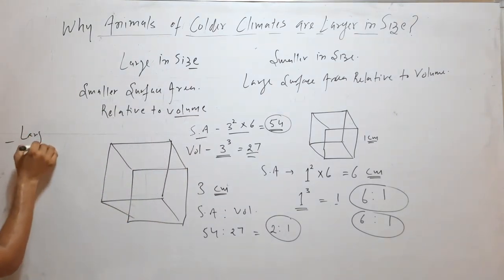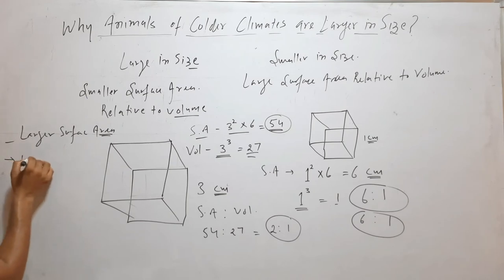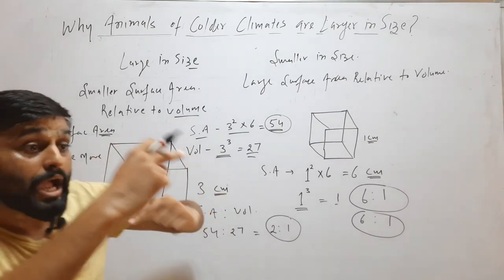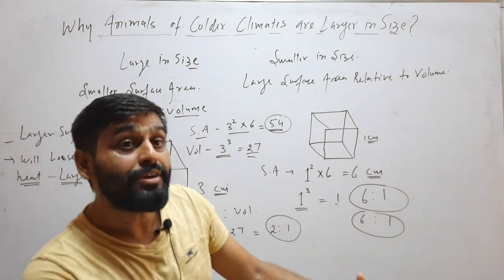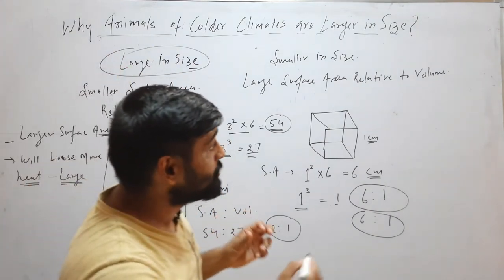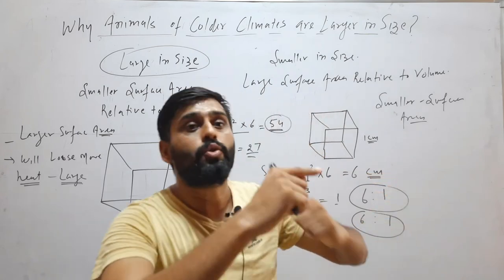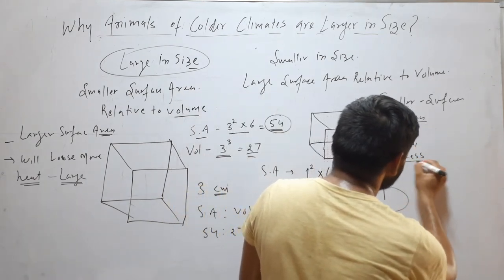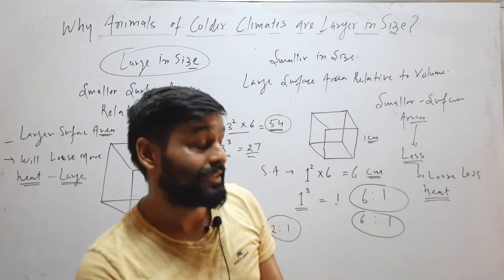Animals which have a larger surface area will lose more heat because their area of contact with the cold climate will be large, so it will be difficult for them to survive in a colder climate. But animals which are large in size have a smaller surface area, so their area of contact with the colder climate will be less, and they will lose less heat. So they can survive easily in a colder climate.